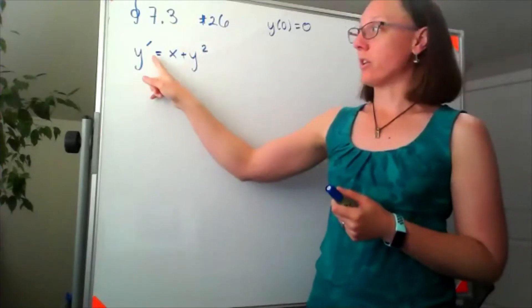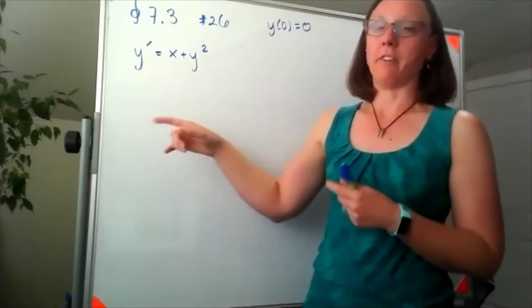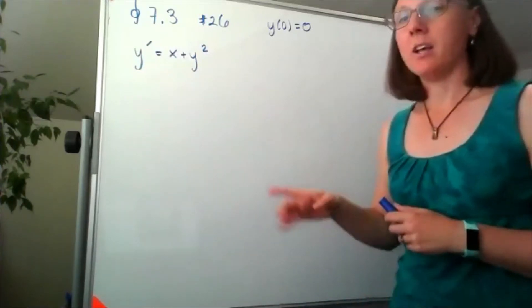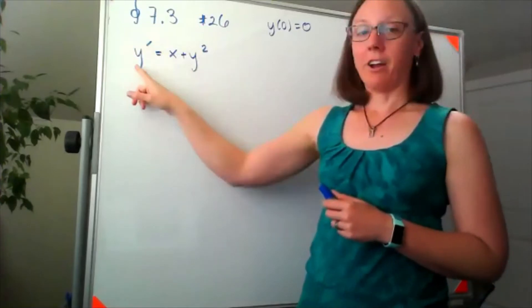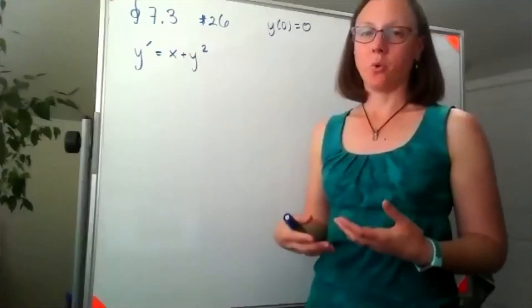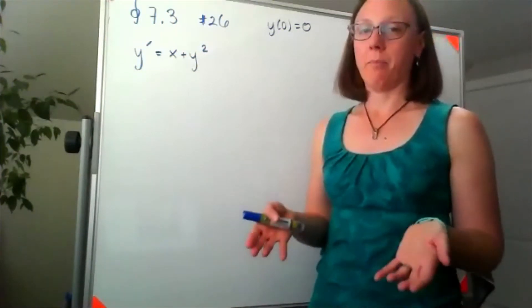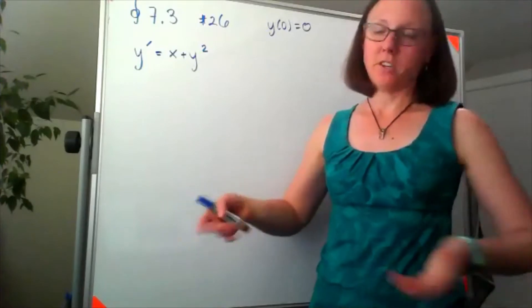It is first order because my derivative is only a first derivative, not a second derivative, but it is not linear because my variable here y appears as a y squared. So it's not a first order linear problem and it's not separable, so we do not have a method in this class to solve it.